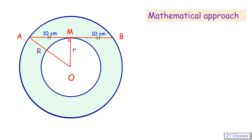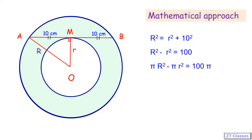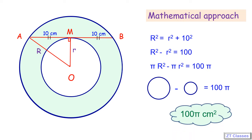Let's apply the Pythagoras theorem. So we get R squared equals r squared plus 10 squared. Let's take small r to the other side. Now let us multiply the equation by Pi. So we get Pi R squared minus Pi r squared equals 100 Pi. Pi R squared is the area of the bigger circle, Pi r squared is the area of the smaller circle, and their difference is 100 Pi. The area of the bigger circle minus the area of the smaller circle is the shaded region, and we have got our answer.